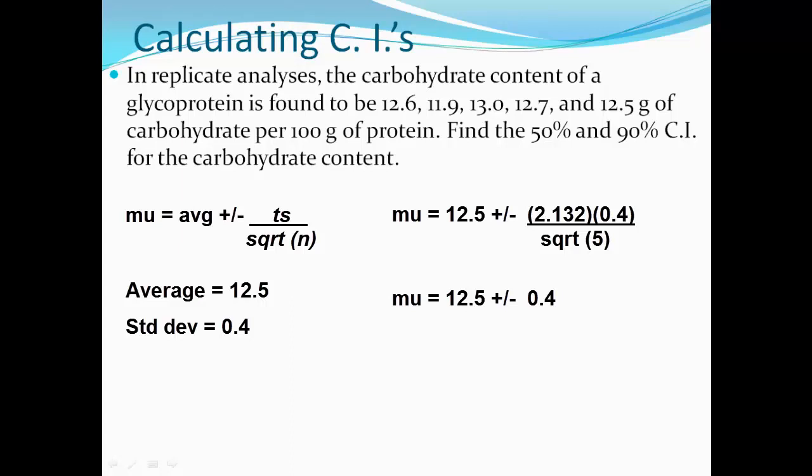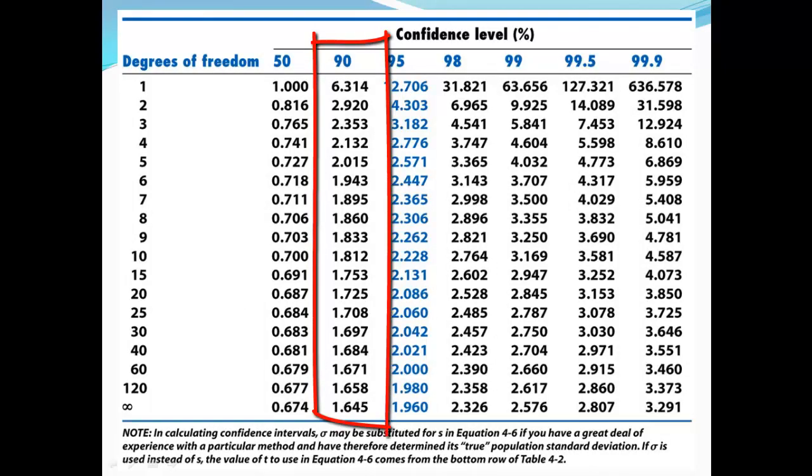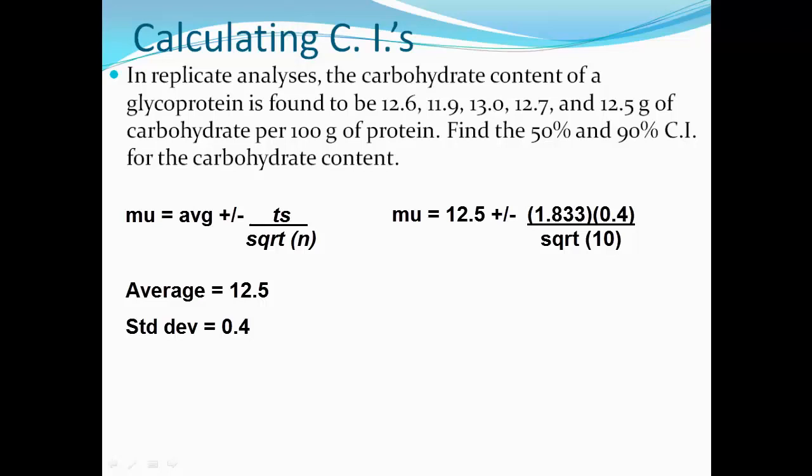The test yourself asks you if your average and your standard deviation stay the same, but instead of 5 values, you use 10 values, what would be your 90% confidence interval? So everything stays the same. The only thing that we're changing is the degrees of freedom. So we go all the way down to 9 at 90%. You see it's 1.833. So you plug that in to the equation.